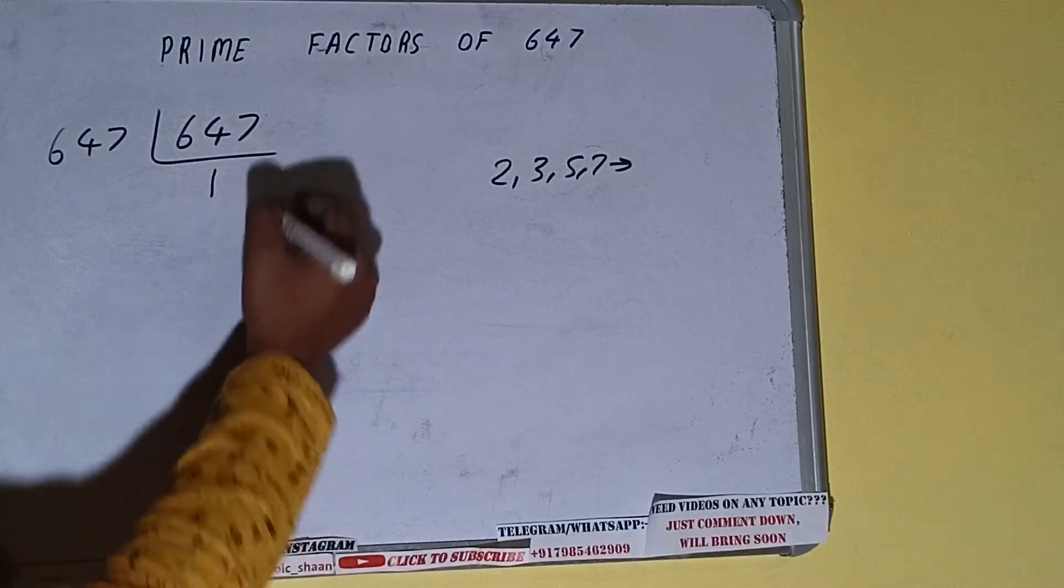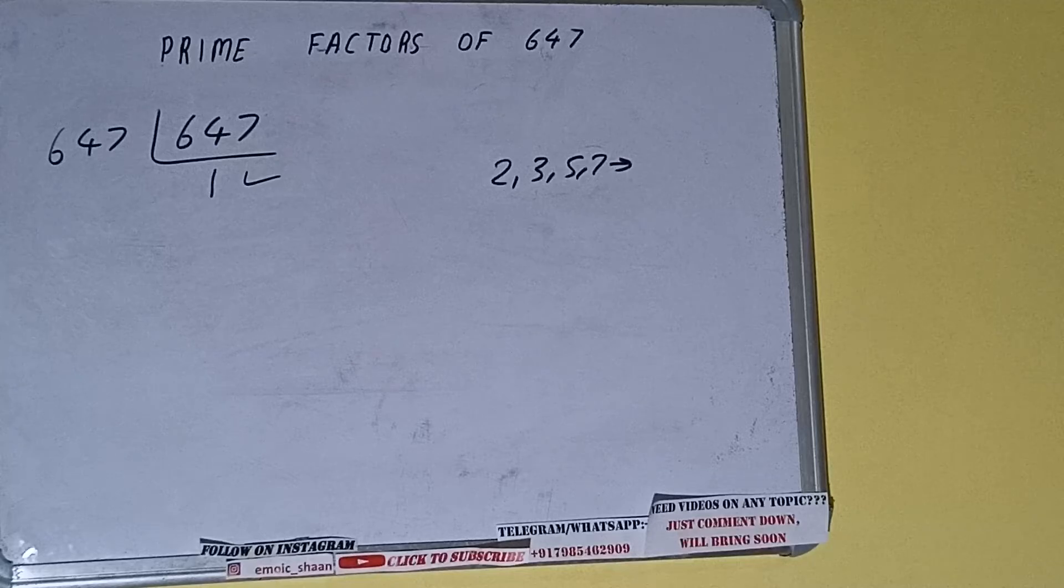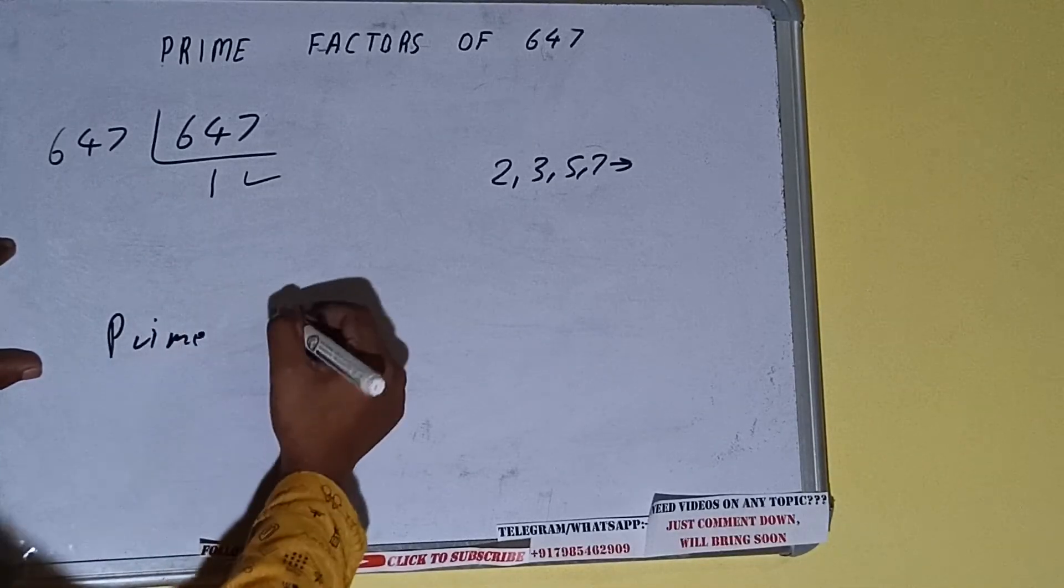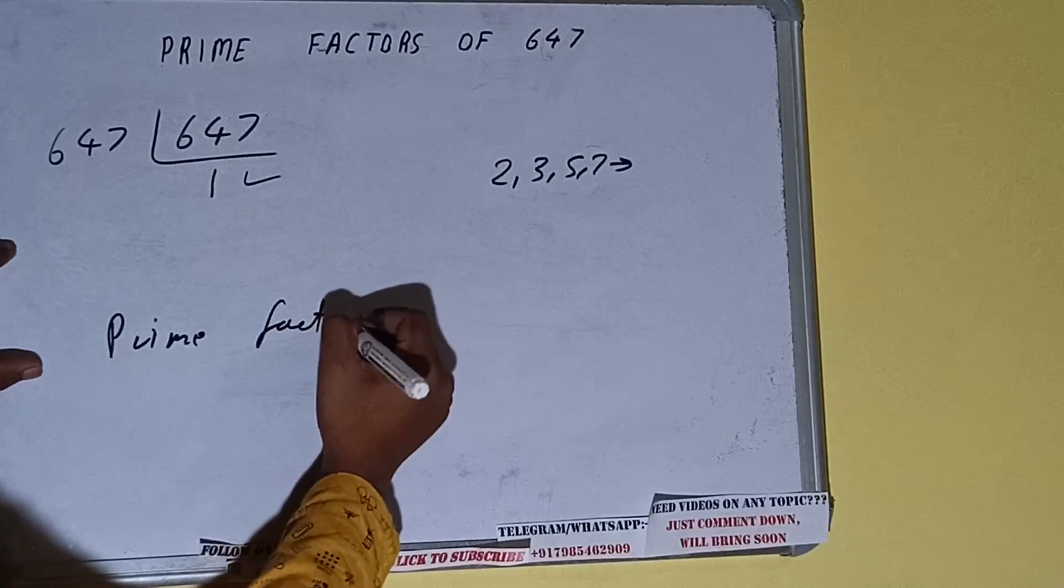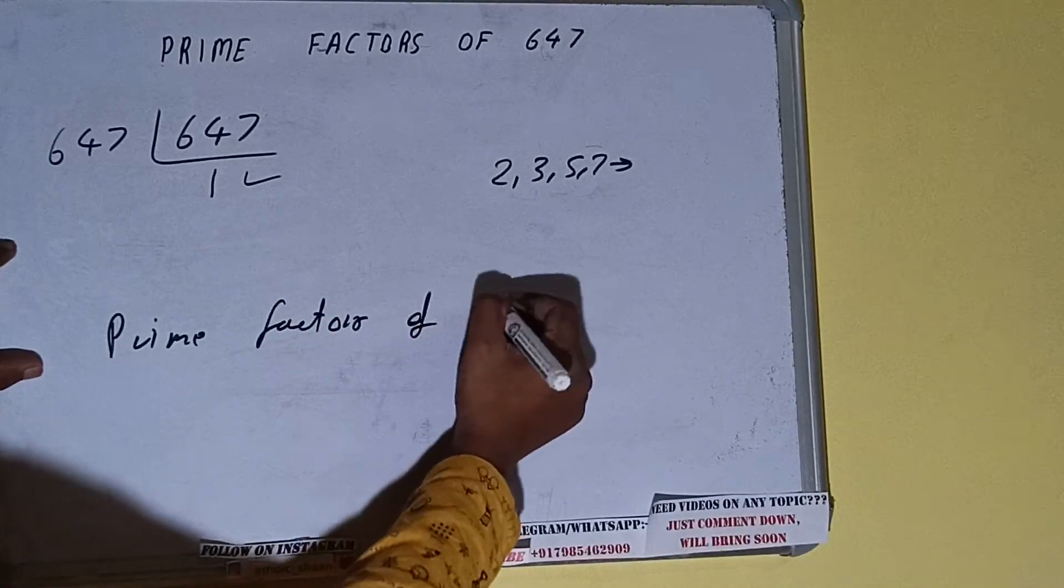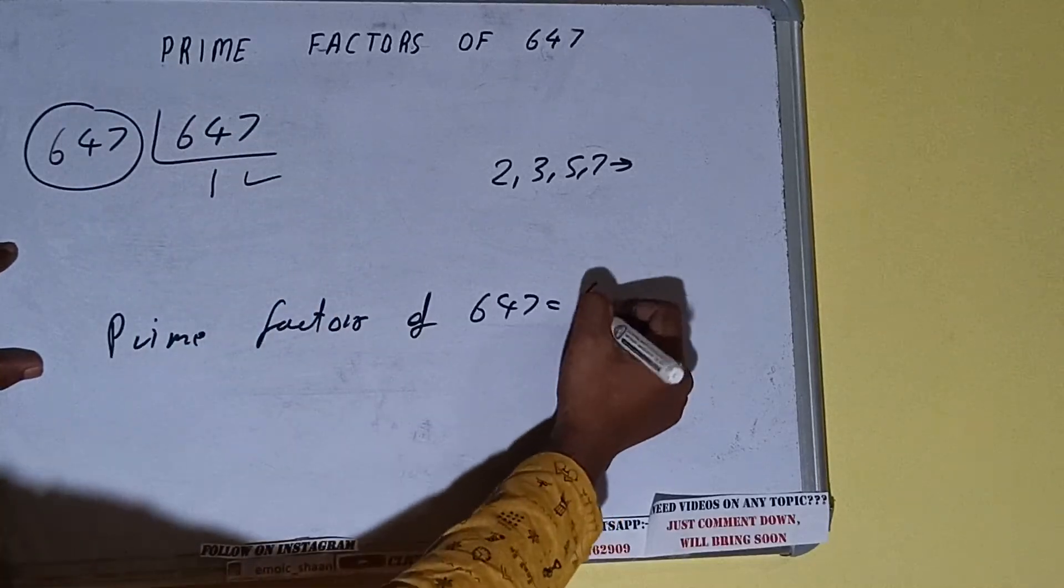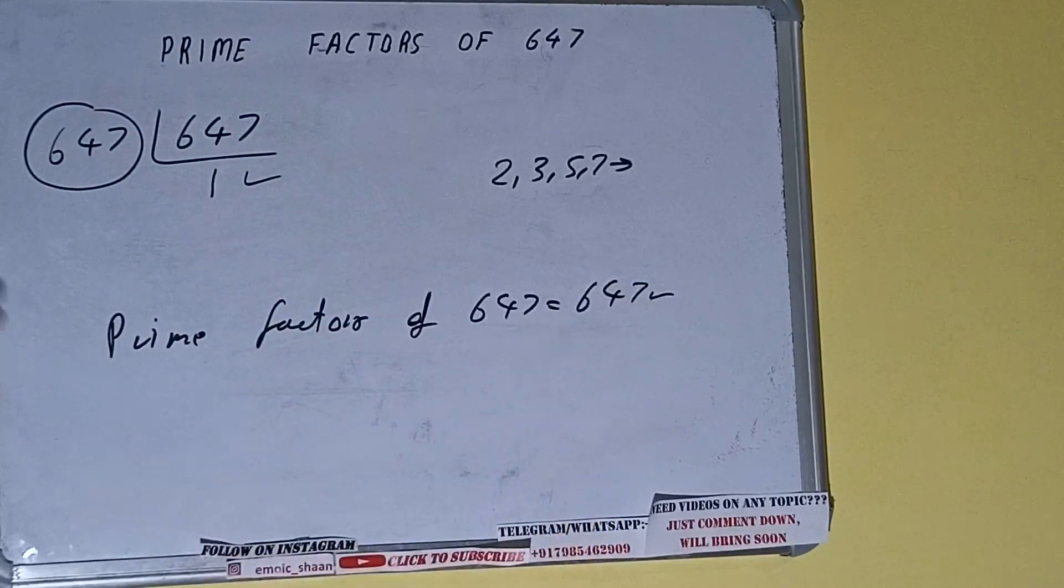Once we get 1 we need to stop and do one last thing. The prime factors of 647 equals whatever is on the left hand side, that is 647. That will be the answer.